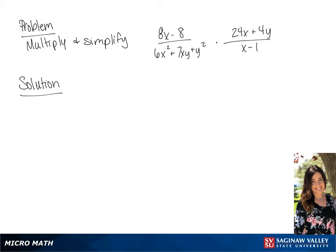We are going to start by factoring the first fraction. In the numerator we're going to have 8 times (x minus 1). In the denominator we are going to have (6x plus y) times (x plus y).